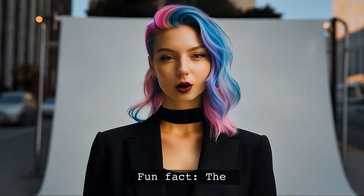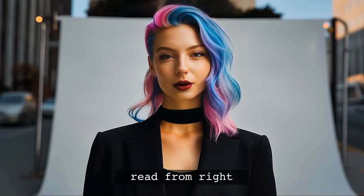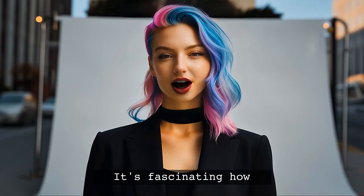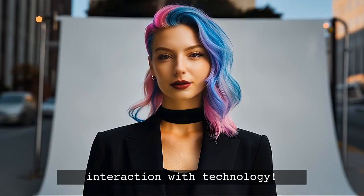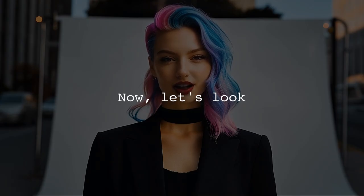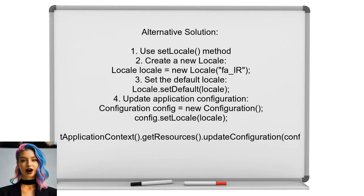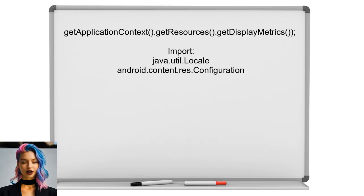Fun fact: did you know that the Arabic language is read from right-to-left? It's fascinating how language shapes our interaction with technology. Now, an alternative solution suggests using the SetLocale method instead of the deprecated approach. First, create a new locale for your desired language, like Persian. Then set this locale as the default and update the application configuration accordingly.